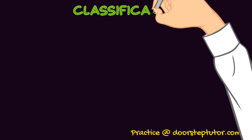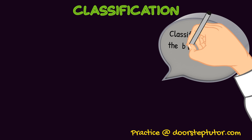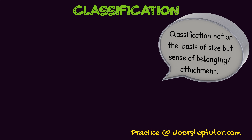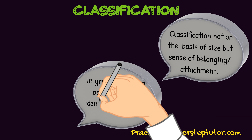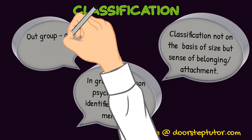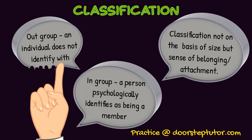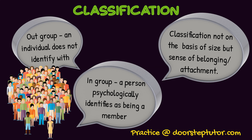It is important to note that the classification into in-group and out-group is not on the basis of size. What matters is the sense of belongingness and attachment. In an in-group, the person psychologically identifies as being a member; in an out-group, the individual does not identify with it. For example, of 10 people at an art gallery, only 4 may actually understand the art and identify with each other — that is psychological identification.